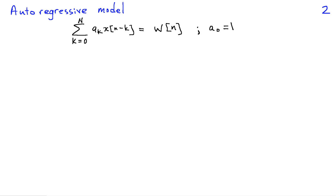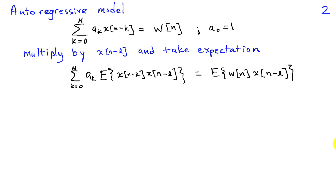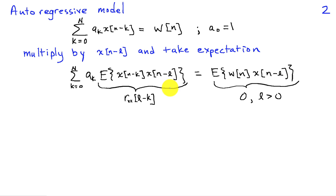We start with the definition of the autoregressive model. If x is the time series, the autoregressive model says that the sum from k equals 0 to N of a_k times x of n minus k has to equal w of n, where w of n is the white noise process that is the input to the linear time-invariant system, and we restrict a_0 to equal unity. To get the Yule-Walker equations, we multiply both sides by x of n minus l and take an expectation, yielding the sum from k equals 0 to N of a_k times the expected value of x of n minus k times x of n minus l, equal to the expected value of w of n times x of n minus l. The first expectation is the definition of the autocovariance function.